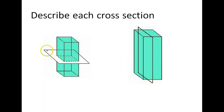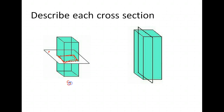Here, notice we have a cross-section. We had this rectangular prism, and we took this white plane here and sliced it right through. So what is the shape of that cross-section that's created? Well, to me it looks like either a square or a rectangle, depending on what labeling we have there.